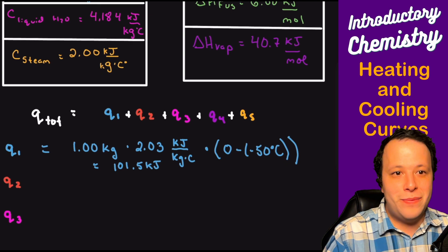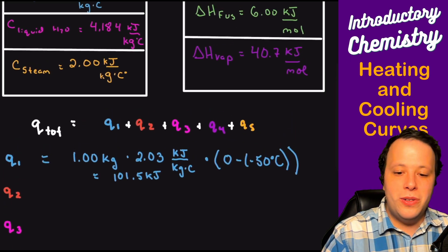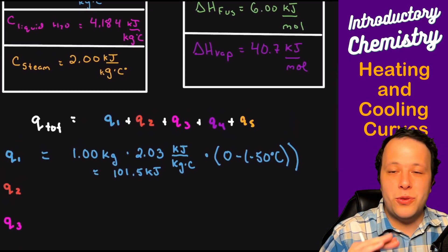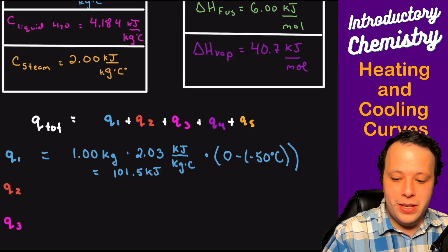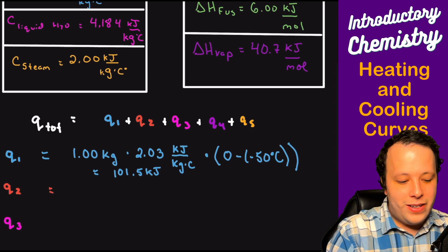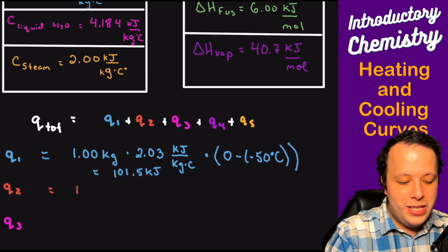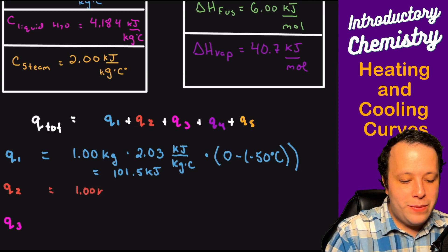And what that's going to become for your Q1 is you're going to have one times 2.03 times 50. So we're going to get 101.5 kilojoules of heat for the first slope.